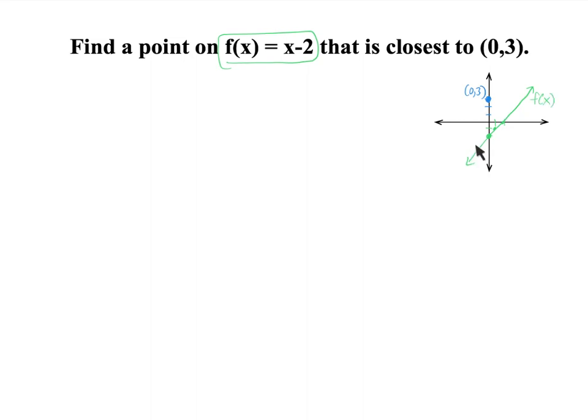What this question is asking for is where on this line will I have a dot that's closest to that? Some of you could think of a logical way of doing this. We're going to use some calculus to do it. Can you tell visually it's somewhere around here? Isn't somewhere around here going to be the closest to that blue dot?